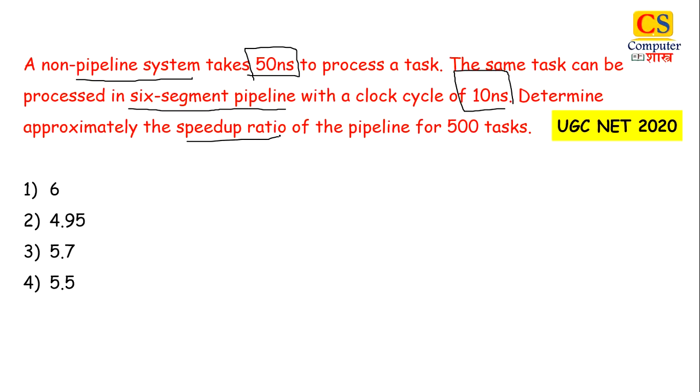Pipeline is a simple question. First, let's look at the non-pipeline system. For non-pipeline system, we have 50 nanoseconds and 500 tasks. So total is 50 into 500. This is our non-pipeline case.